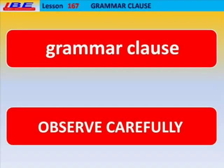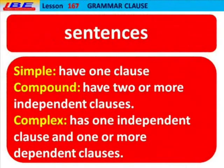Grammar — clause. Observe carefully. There are simple, compound, and complex sentences. Simple sentences have one clause. Compound sentences have two or more independent clauses. Complex sentences have one independent clause and one or more dependent clauses.